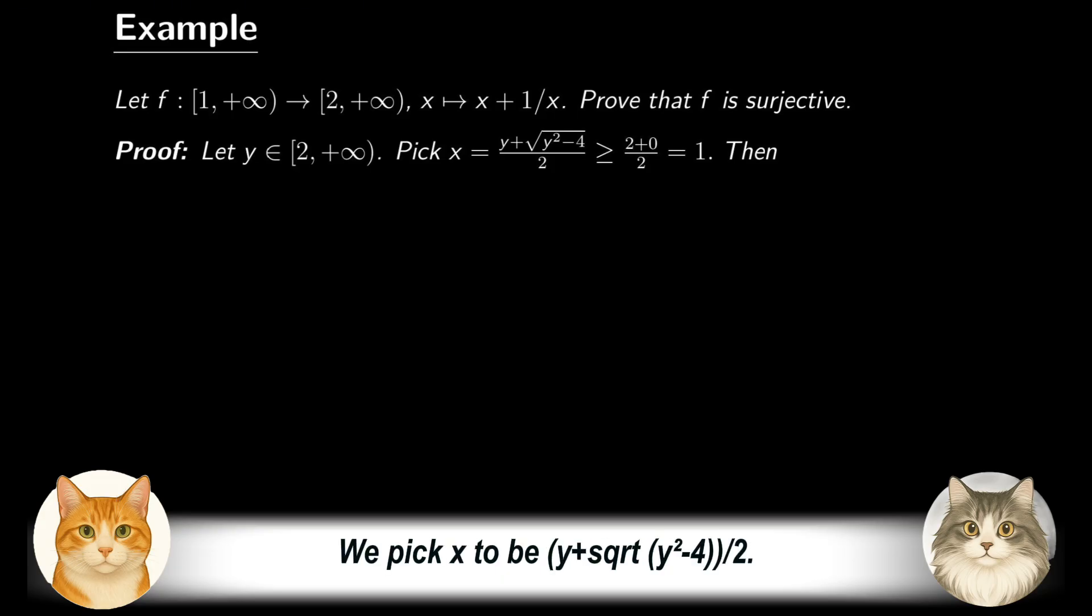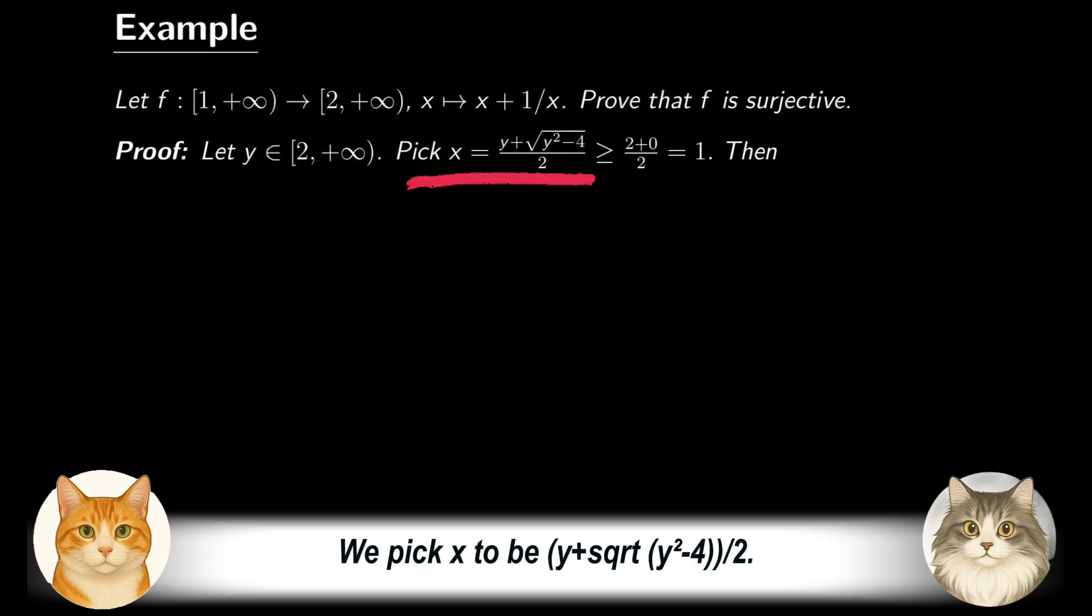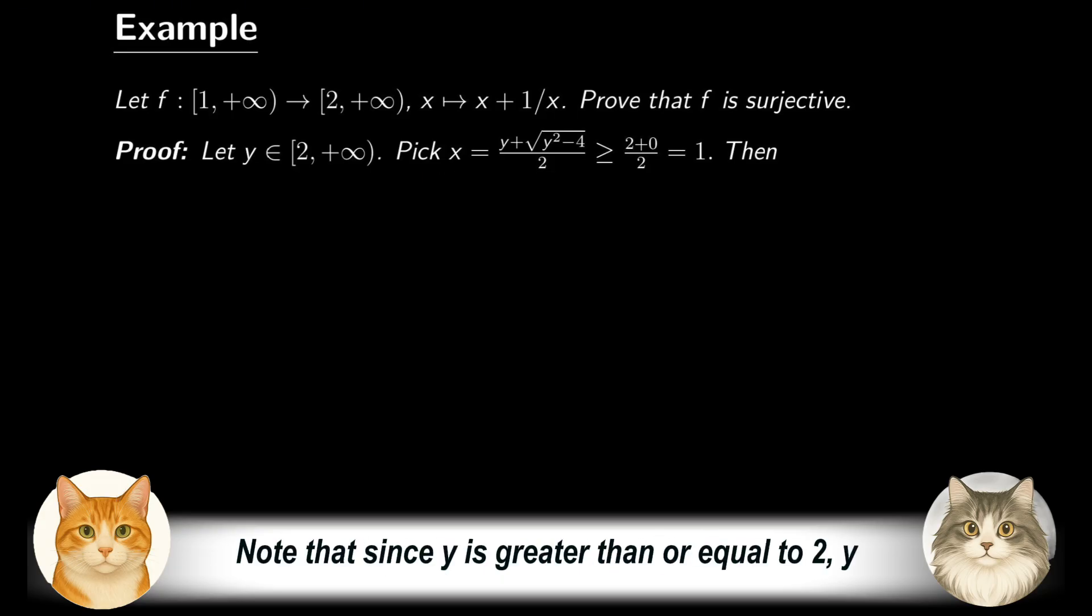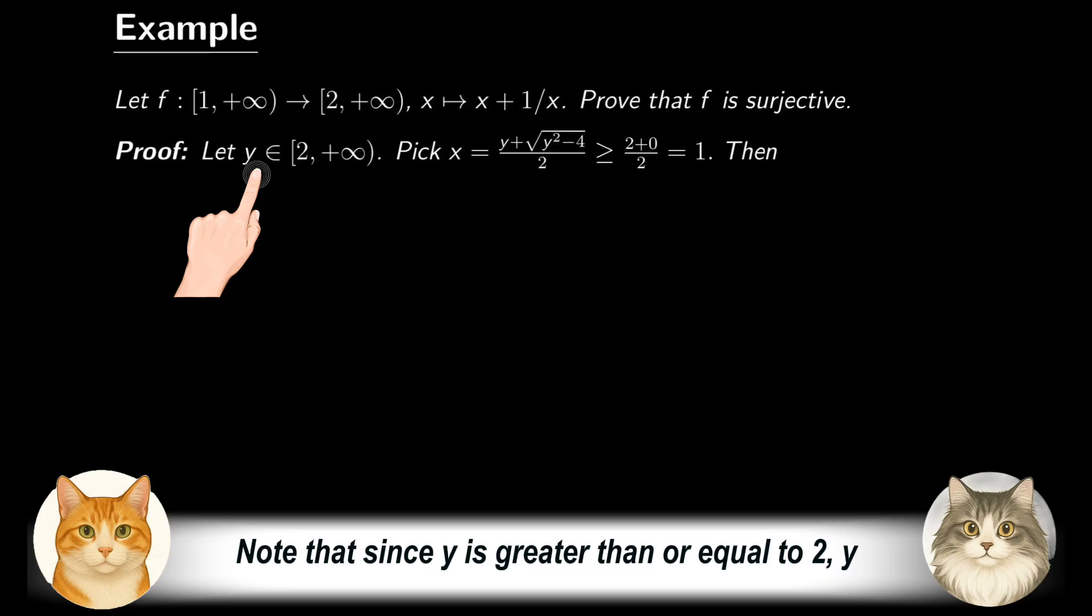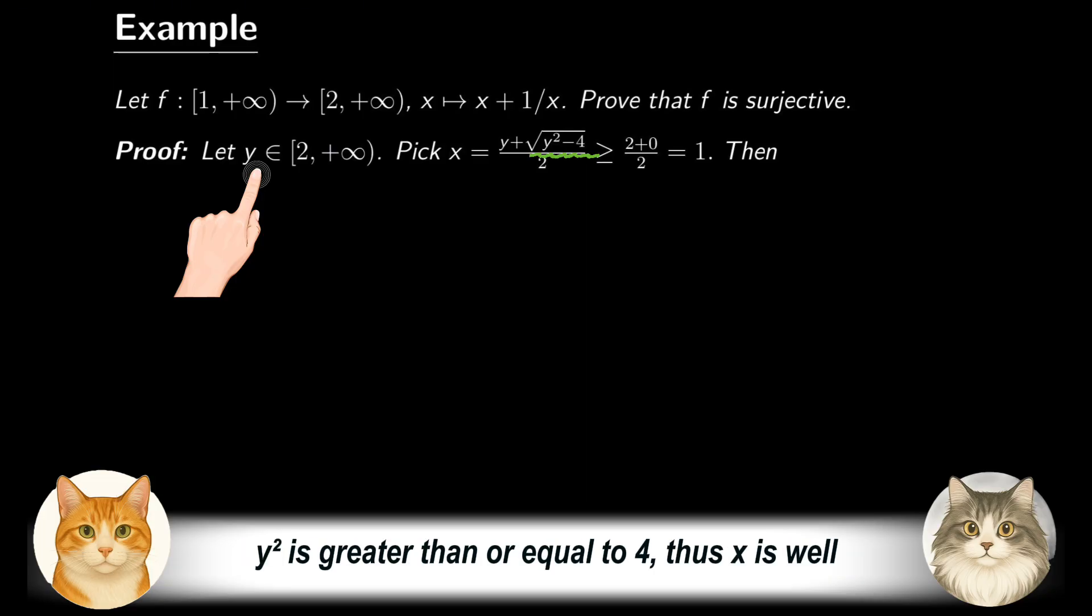We pick x to be (y + √(y² - 4))/2. Note that since y is greater than or equal to 2, y² is greater than or equal to 4, thus x is well defined. Moreover, since the square root is non-negative, x is greater than or equal to y/2, which is in turn greater than or equal to 1. This ensures that x is in the desired domain.